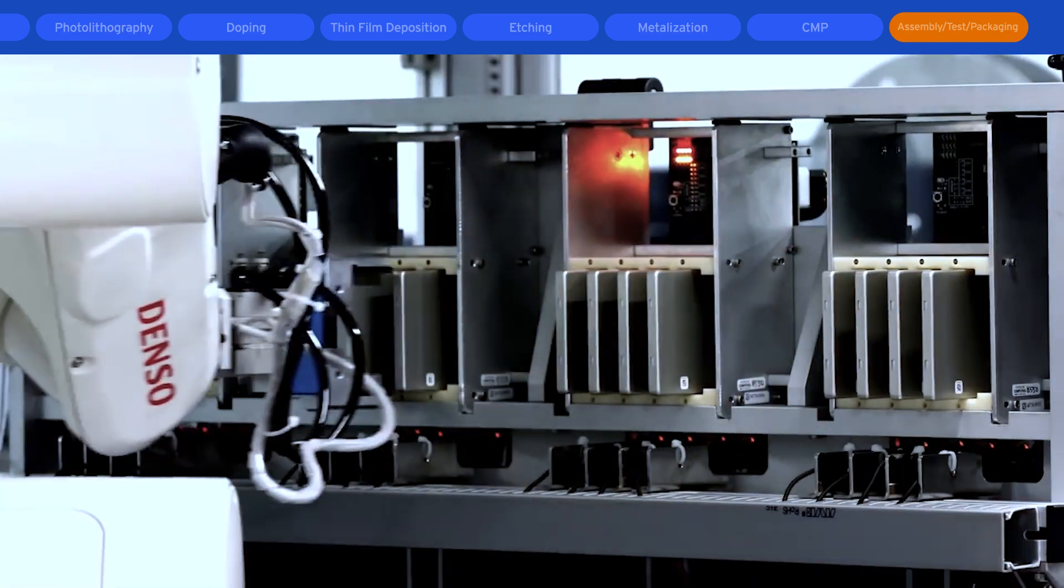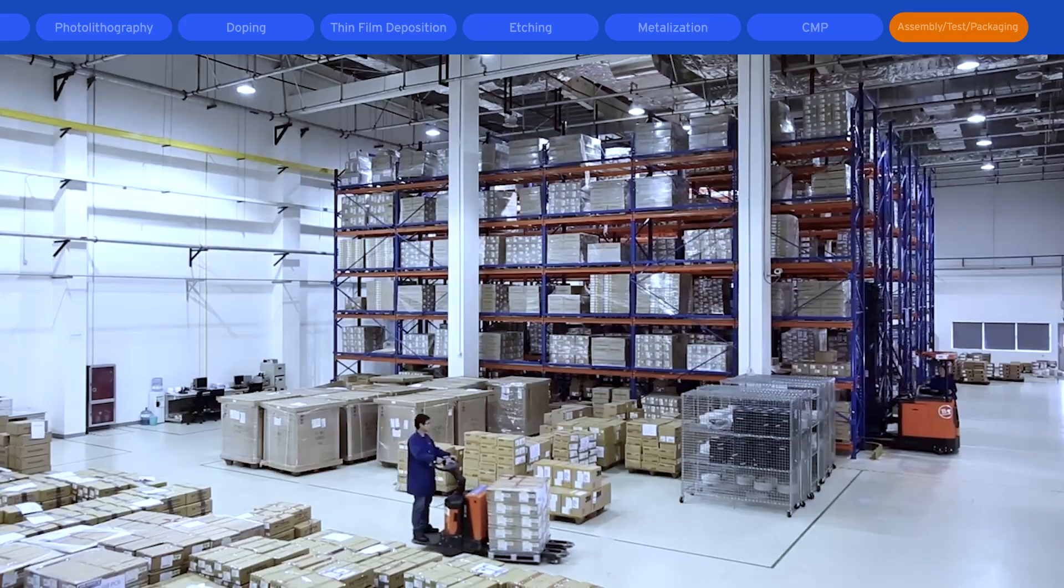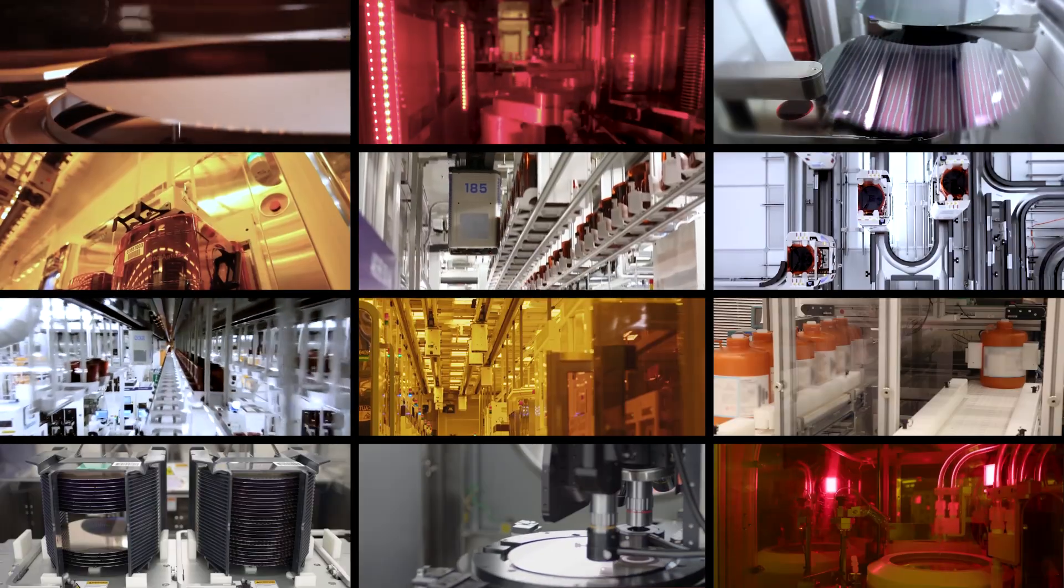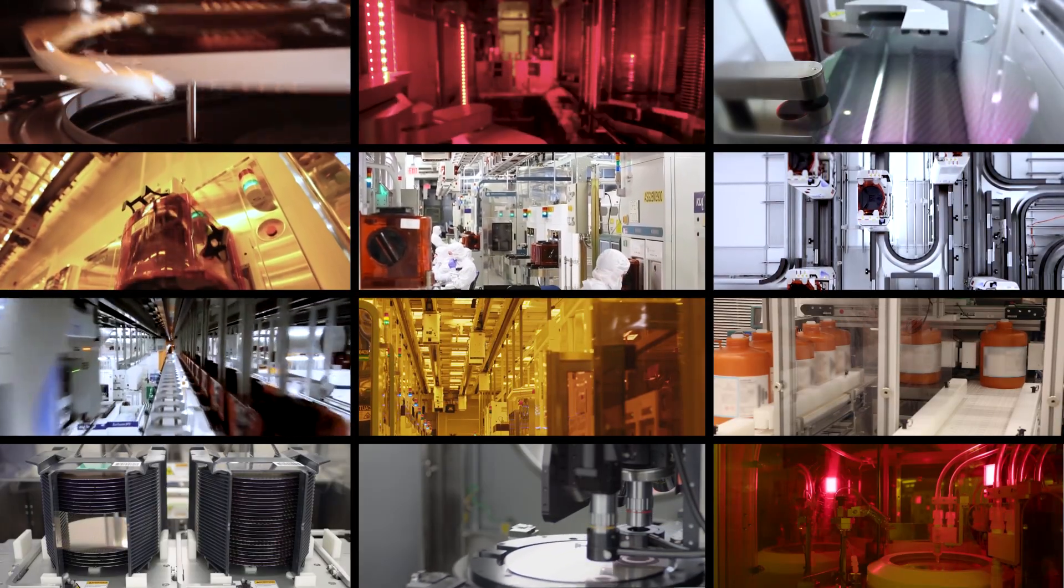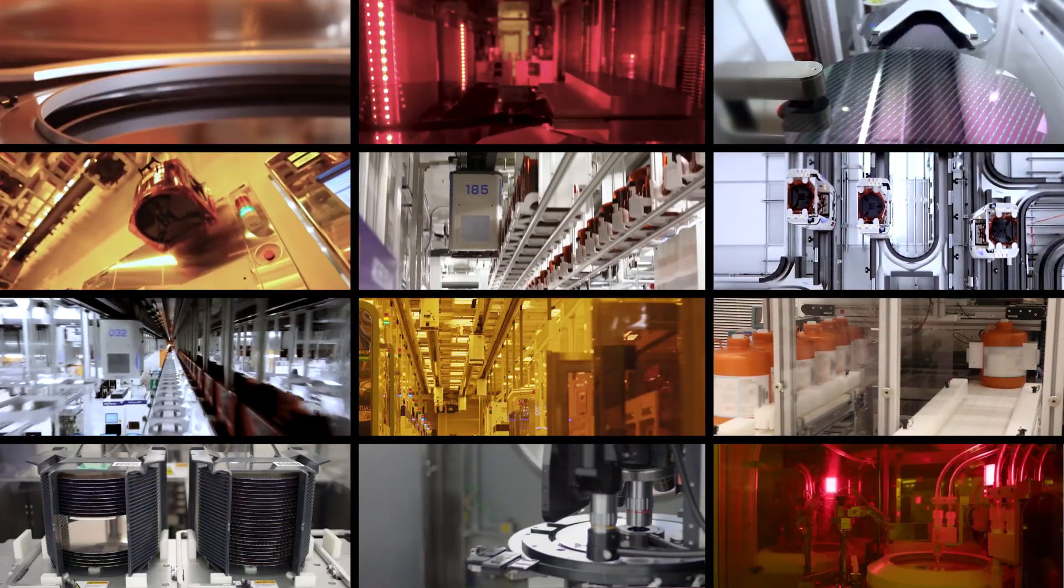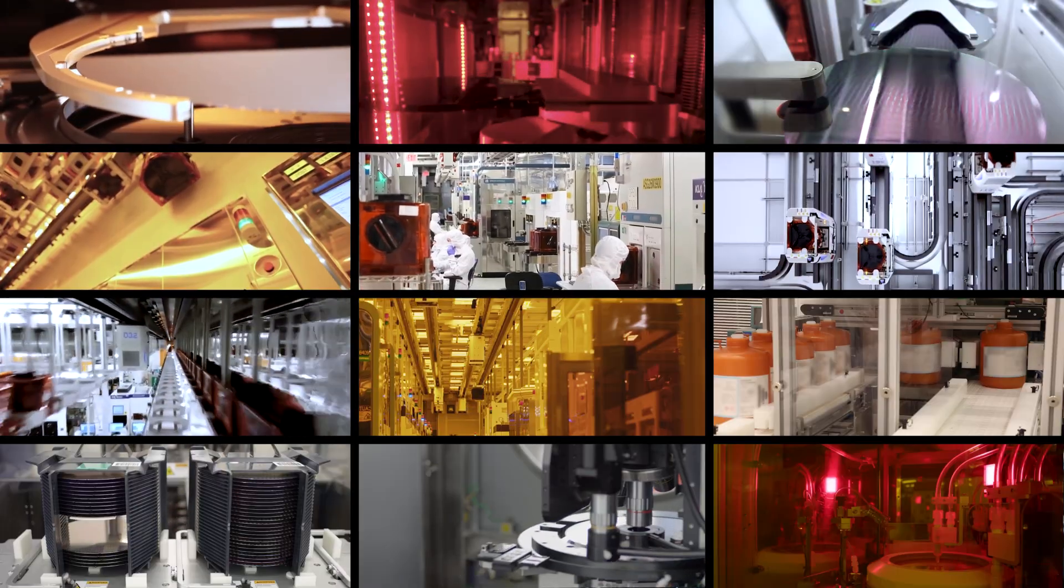The packaged devices are placed in boxes and shipped to customers for incorporation into the products that power our modern world. All told, the semiconductor manufacturing process can involve from 400 to more than 1,400 tightly controlled and automated steps involving precise machinery, each using specific high purity chemistries.